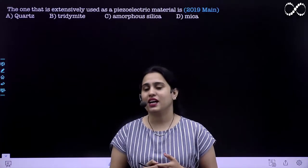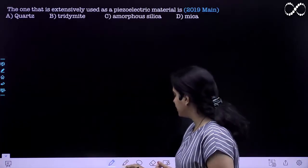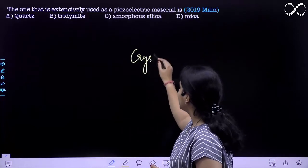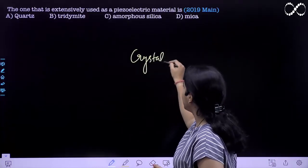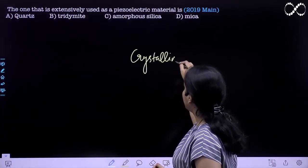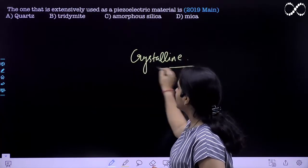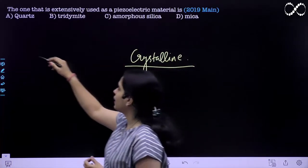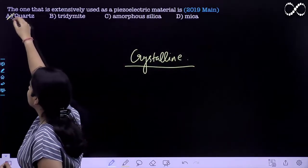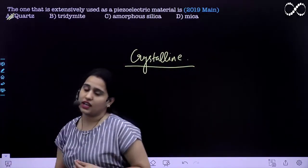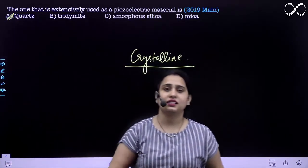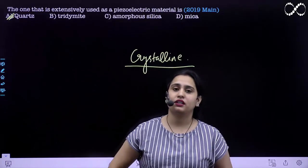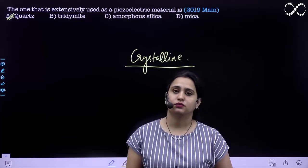So these types of substances are basically crystalline. Crystalline solids are piezoelectric, and among all of them, we have quartz, which is crystalline. So quartz is a piezoelectric substance. Thank you.